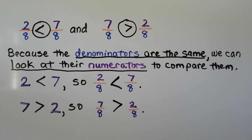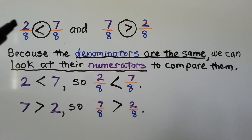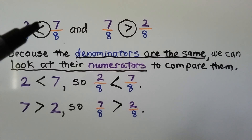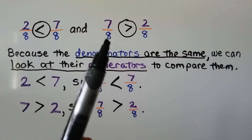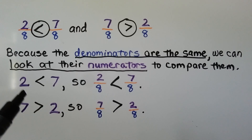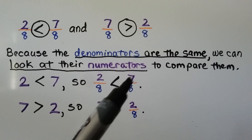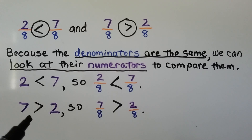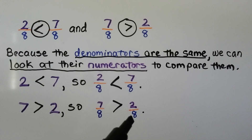Because the denominators are the same, we can look at their numerators to compare them. Both have an 8 as denominator, so we look at the numerator. The 2 is less than 7. We can also switch it around — they both have denominator 8. 7 is greater than 2. We know 2 is less than 7, so 2 eighths is less than 7 eighths. We know 7 is greater than 2, so 7 eighths is greater than 2 eighths.